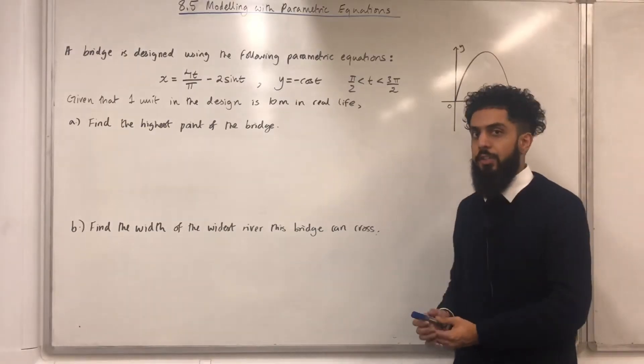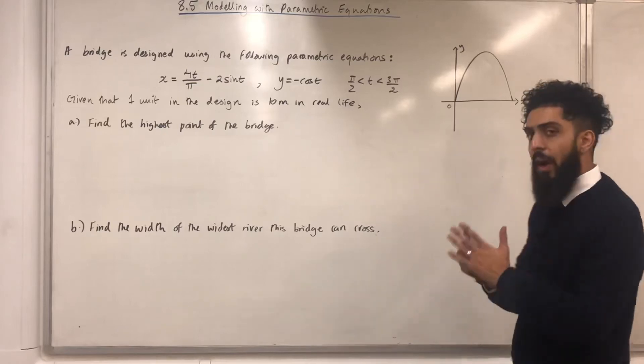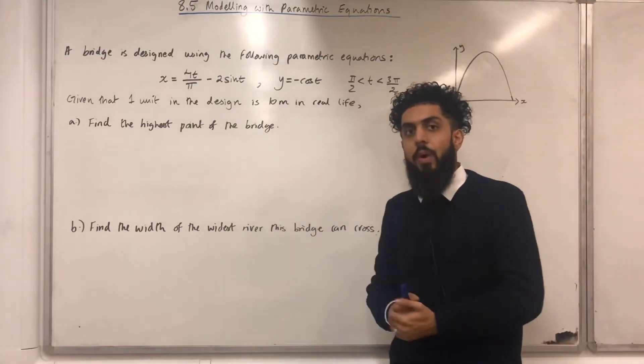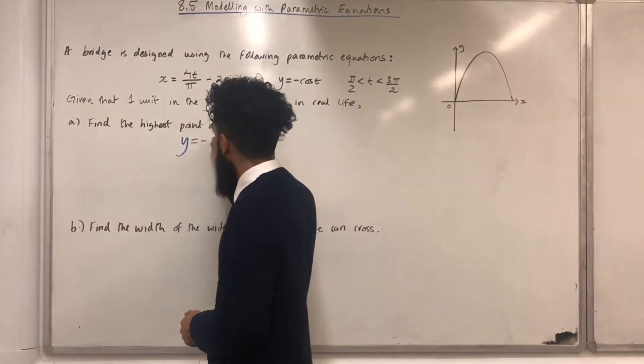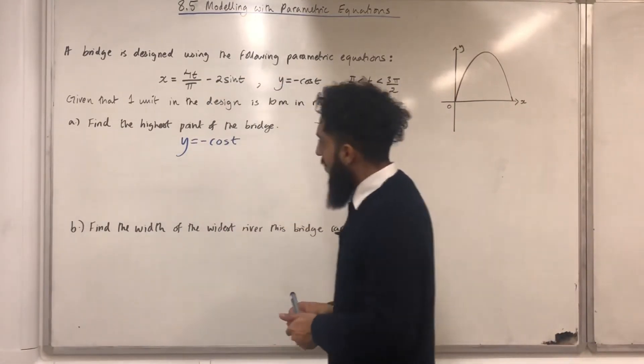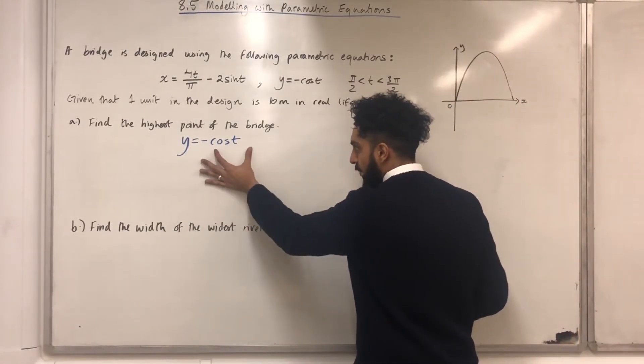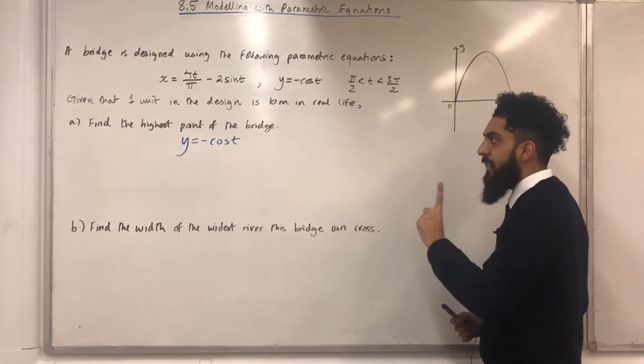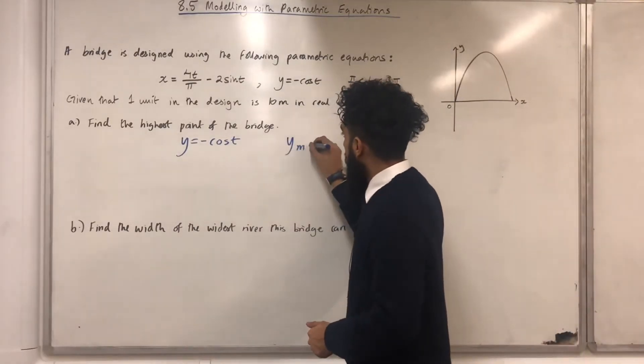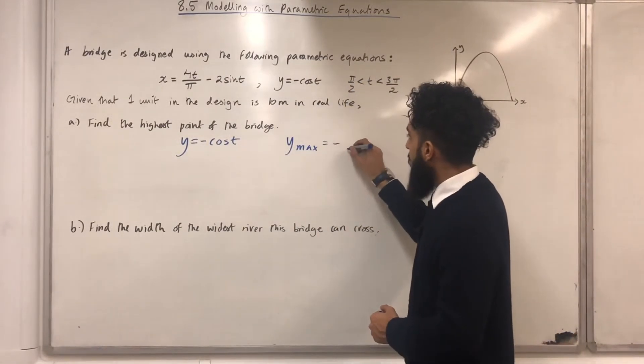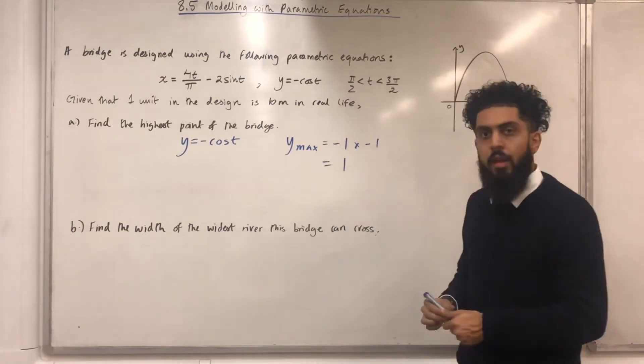Part A finds the highest point of the bridge. Now, the height of the bridge represents y. The width of the bridge represents x. If I want the highest point of the bridge, I want y to be a maximum. So first of all, I'm going to start off by writing the equation for y. If I look at this equation very carefully, I've got that negative in front of the cos t. So I want cos t to be a minimum. That is, I'm going to replace cos t with minus 1. So y max equals minus 1 times minus 1, which is just 1.